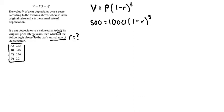If we divide both sides by 1000, we'll cancel out the 1000. And 500 divided by 1000 equals 0.5, so 0.5 equals 1 minus R to the power of 5.